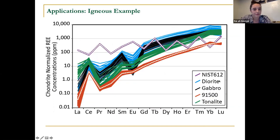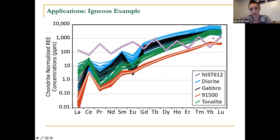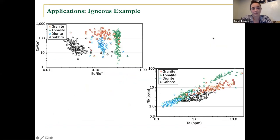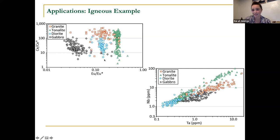Here's an example produced in our lab early on — I think this was one of George's early datasets. NIST and 91-500 here are our standards, and the white dashed lines are the known compositions, showing we're doing a pretty good job of reconstructing those. We have a tonalite, a diorite, and a gabbro, and we can differentiate them purely on their rare earth element spectra or in cross-plot spaces — for example, cerium versus europium anomaly, or niobium versus tantalum. This is really compelling if you have zircons in a basin with multiple source regions of the same age — you could start to fingerprint those different source regions with trace element chemistries.